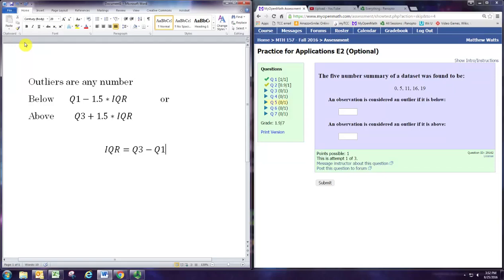In this video, we'll see how to determine the bounds that determine where outliers are, or whether numbers are considered outliers, given a five-number summary for a dataset. If you just have the dataset, you would need to determine the five-number summary first.